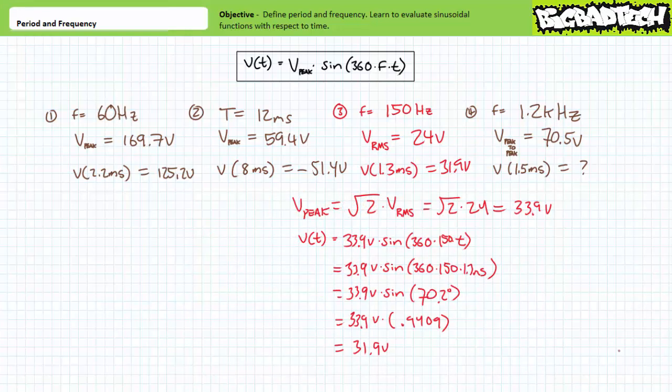For Example 3, we're given an effective or RMS value of 24 V — this is equivalent to a peak value of √2 × 24 V ≈ 33.9 V. Hopefully you didn't fall into this trap: peak values are always greater than effective values. Given a frequency of 150 Hz, the time-variant function is V(t) = 33.9 V × sin(360 × 150 × t). Substituting 1.3 milliseconds yields an angle of 70.2 degrees. Sine of 70.2° is approximately 0.9409, and multiplying by 33.9 V yields an output voltage of approximately 31.9 volts.